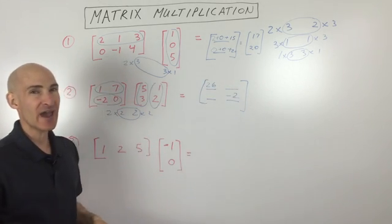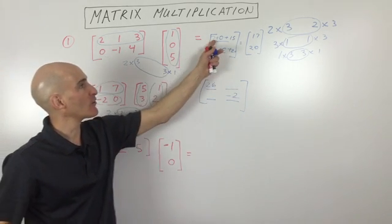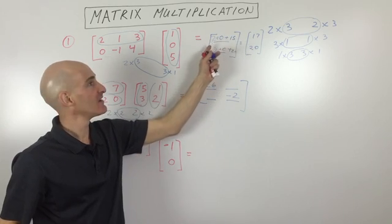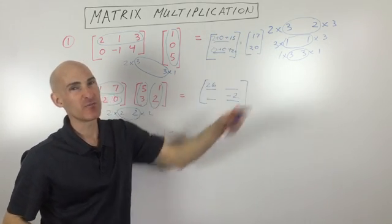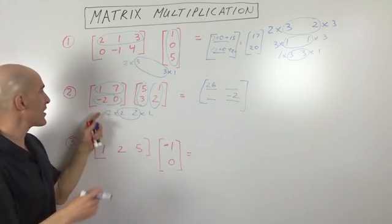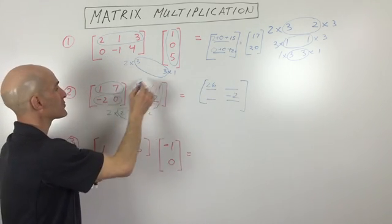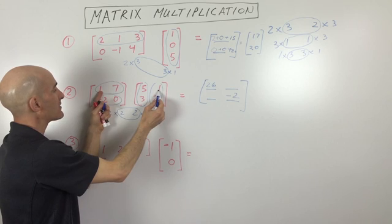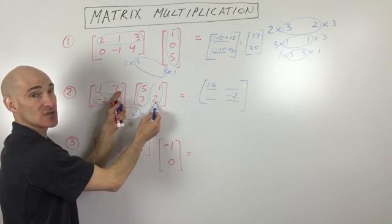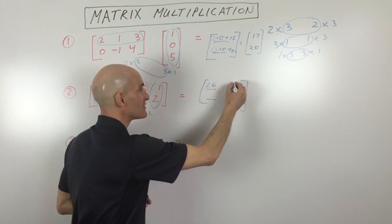Now you can see I'm doing it in my head, but if it was more complicated, I would write down each product and then add them together separately. But if the numbers aren't too large, you can do it in your head. So let's look at this one here. This is in the first row, second column. One times one is one. Seven times two is 14. 14 plus one is 15.